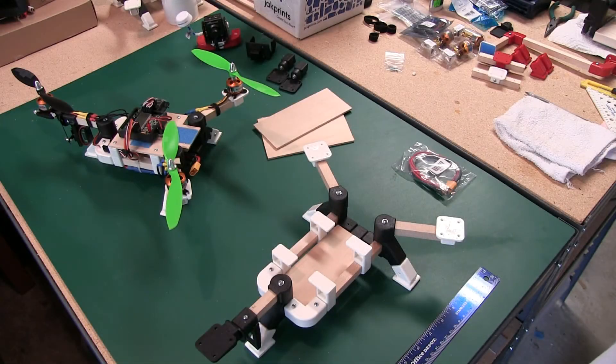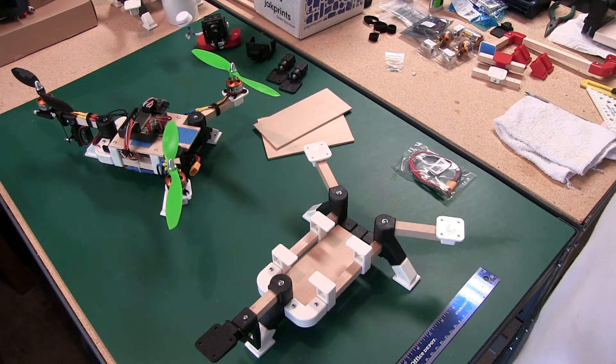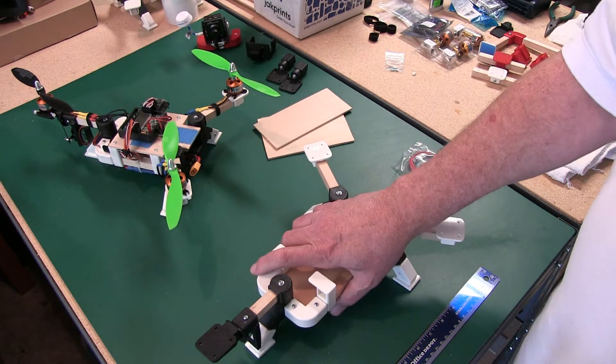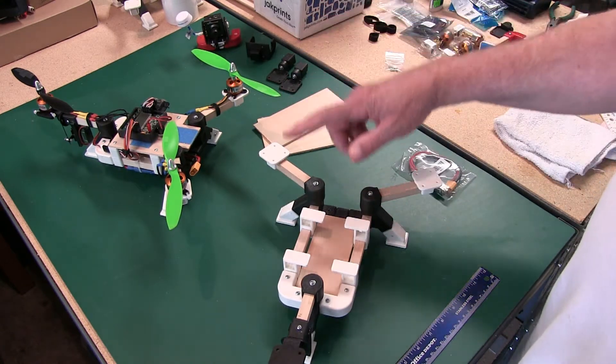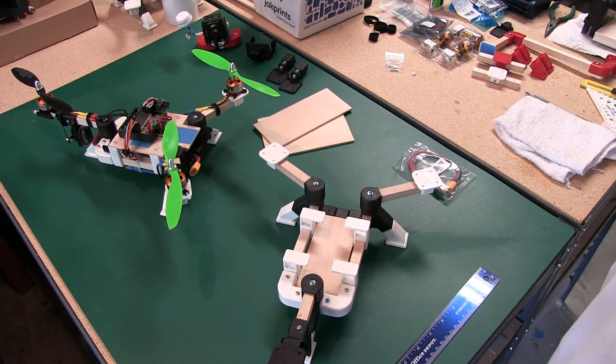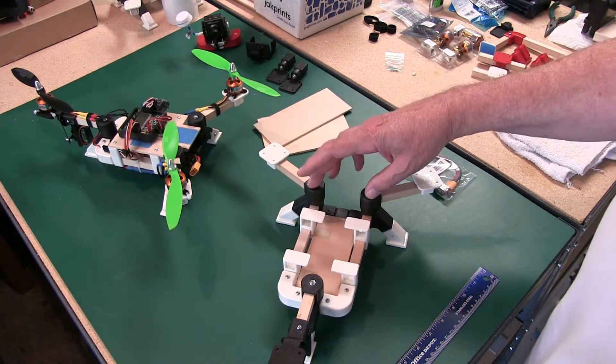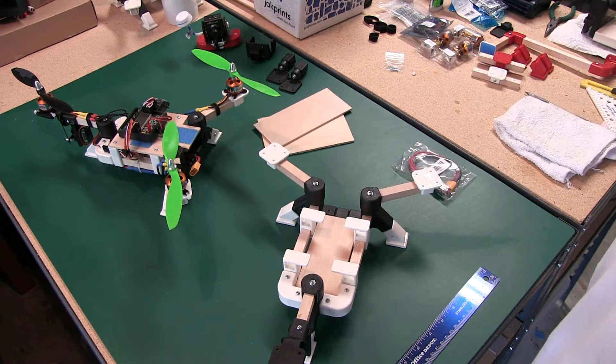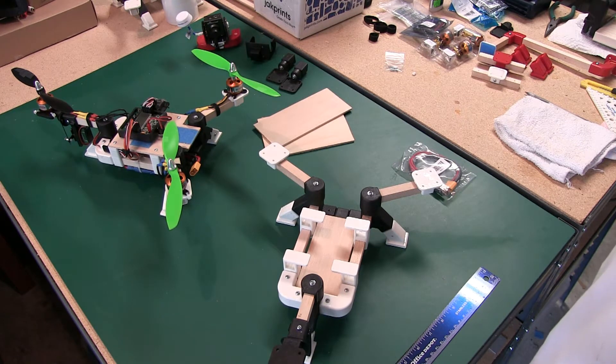This is Danny with Quad Lugs, and this is the build tips video for the mini XL tricopter. To start with, as I always say, they all build the same. On the quick build guide 1 through 10, you have the arm prep, and you can just take a look at all those videos. They help out.